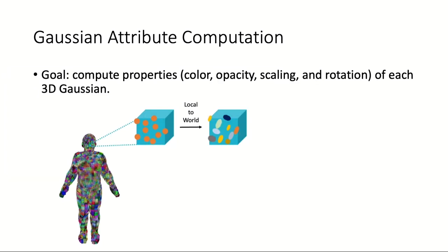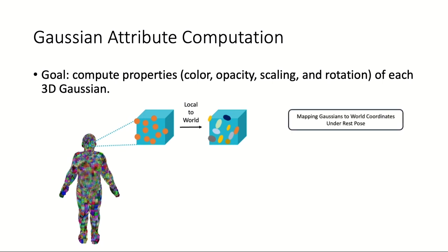For each 3D Gaussian, we compute its color, opacity, scaling, and rotation by first mapping it from the local primitive coordinate system to the world coordinate system using the primitive's transforms under the rest pose.